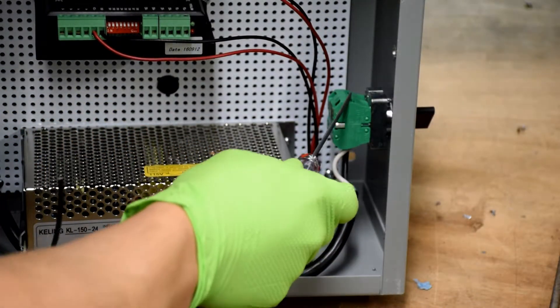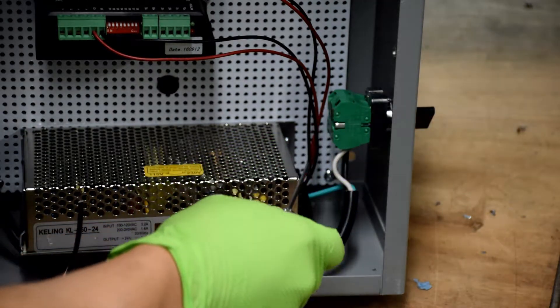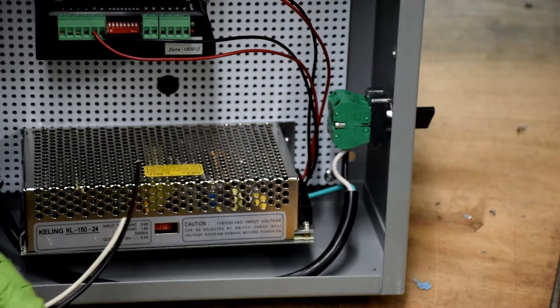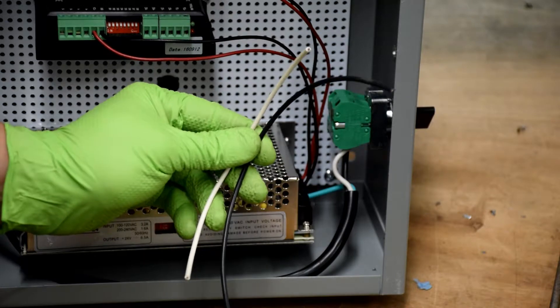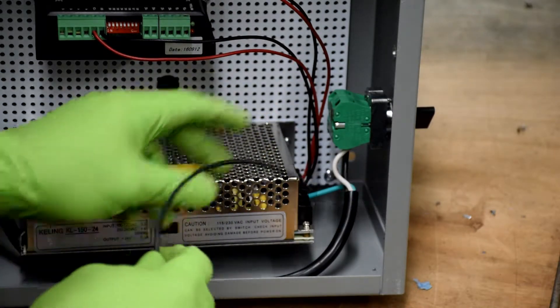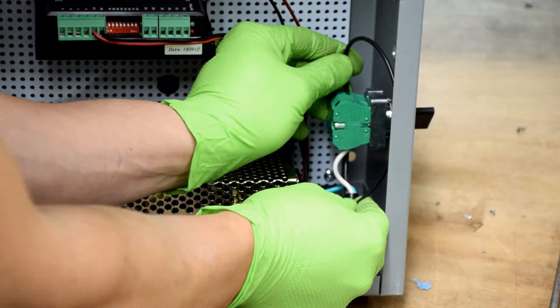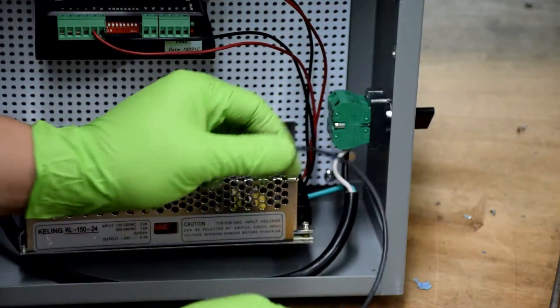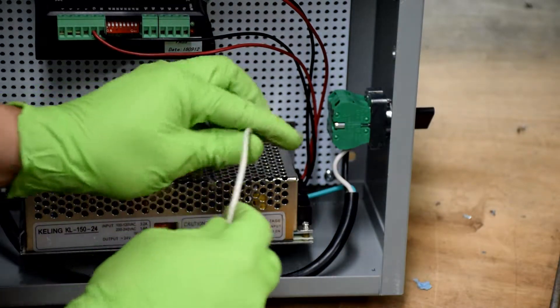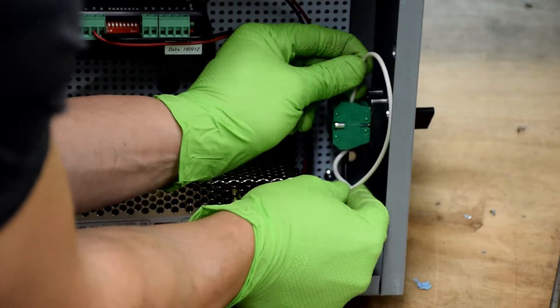I've got a couple pieces of 16 gauge stranded wire lying around, and I'm going to wire those from the on-off switch into the power supply. And what I'm going to do is just kind of check my length here and make sure it's enough wire. It's not too short, not too long. And I'm going to do the same thing with the white wire.